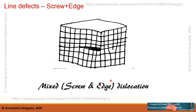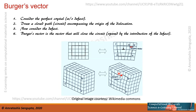Another kind of line defect can also exist where there is a mixture of screw and edge. Here we see there is a screw component and also an extra half plane or missing part of a complete plane, which is an edge dislocation component. Edge and screw combine to make a mixed dislocation.